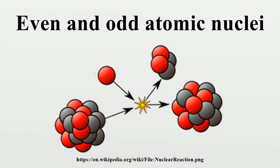Odd-proton, odd-neutron: Only 5 stable nuclides contain both an odd number of protons and an odd number of neutrons. The first four odd-odd nuclides occur in low-mass nuclides, for which changing a proton to a neutron or vice versa would lead to a very lopsided proton-neutron ratio. The only other observationally stable odd-odd nuclide is 180m-Ta-73 (tantalum), the only primordial nuclear isomer, which has not yet been observed to decay despite experimental attempts.